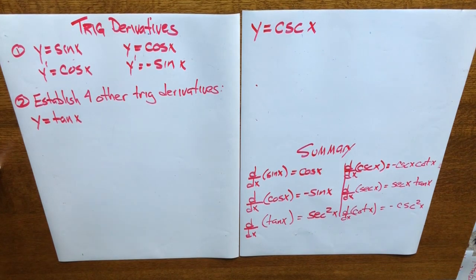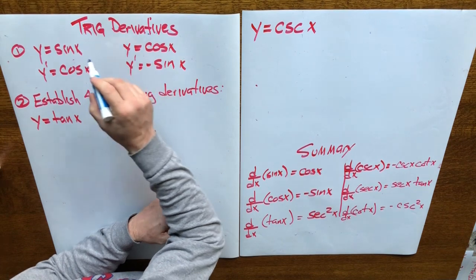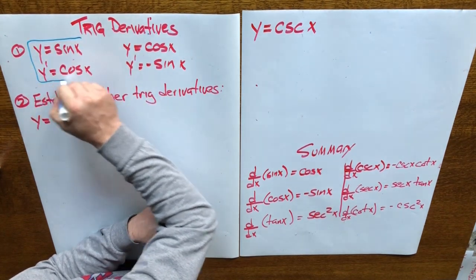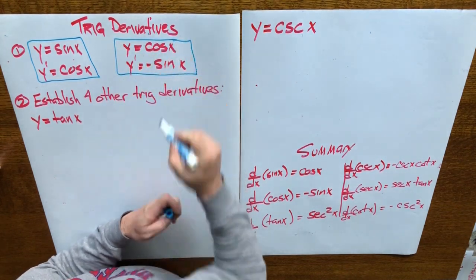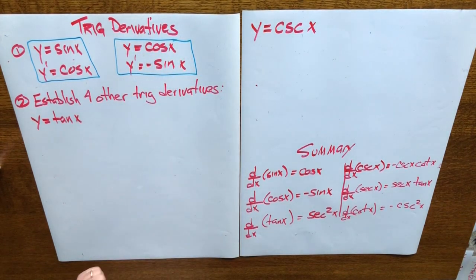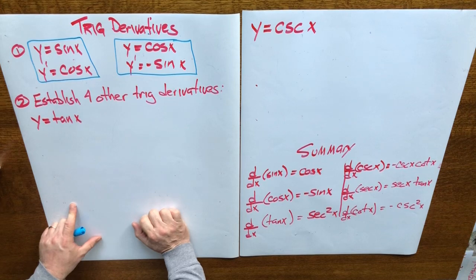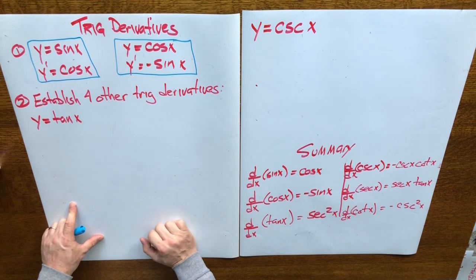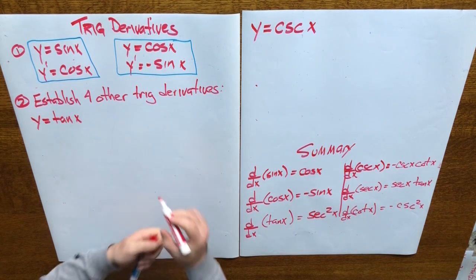Here's our next video that will help us take the derivative of the other four trig functions. In previous lessons we've established the two basic derivatives: the derivative of sine x is equal to cos x, and the derivative of cos x is equal to negative sine x. What I'd like to do is come up with a derivative for tan x and cosecant x, and then you can follow the procedure yourself or look at the note for the other trig functions. There's also a summary at the bottom.